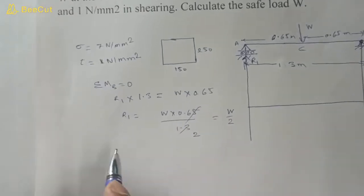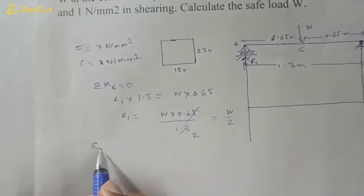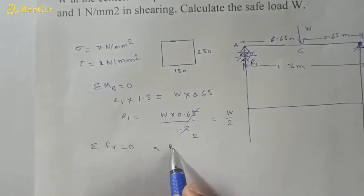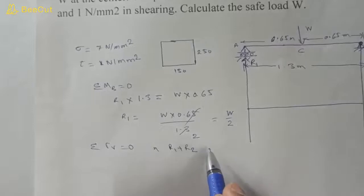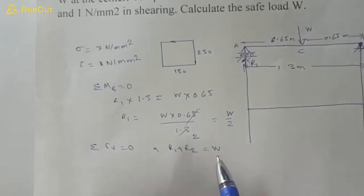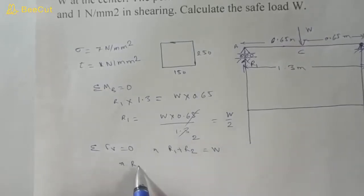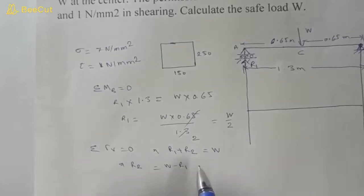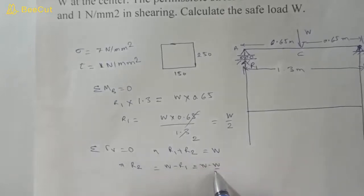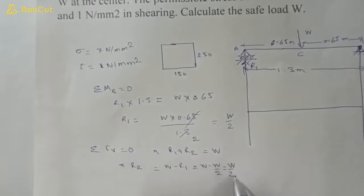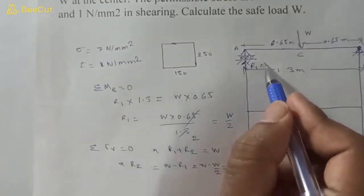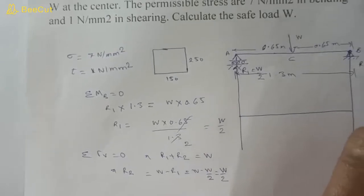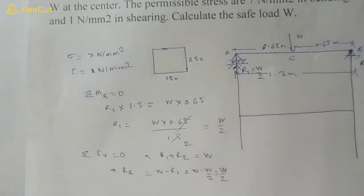From vertical equilibrium, R1 plus R2 equals W, so R2 equals W minus R1, which equals W minus W/2, equals W/2. So R1 equals W/2 and R2 equals W/2.